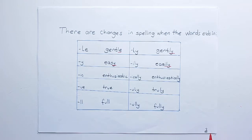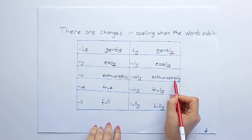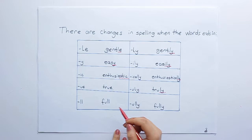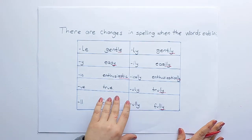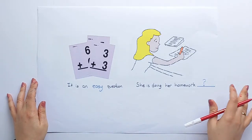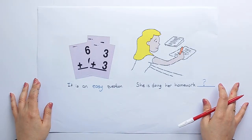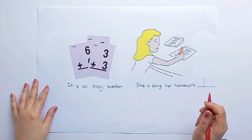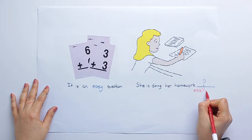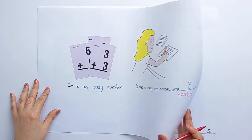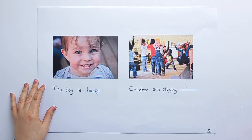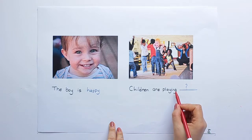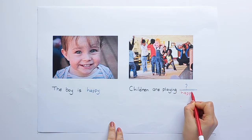Enthusiastic → enthusiastically. True → truly. It is an easy question. She is doing her homework easily.